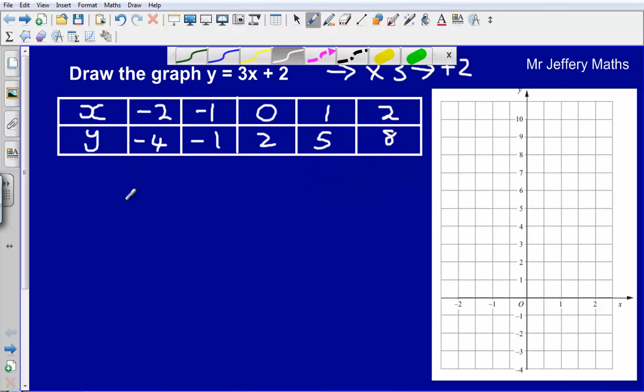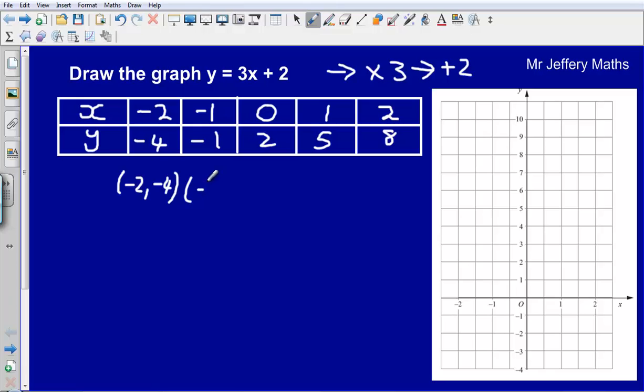Our coordinates here are minus 2, minus 4. Our x coordinate is minus 2, our y coordinate is minus 4. Next one is minus 1, minus 1. The next one is 0, 2.